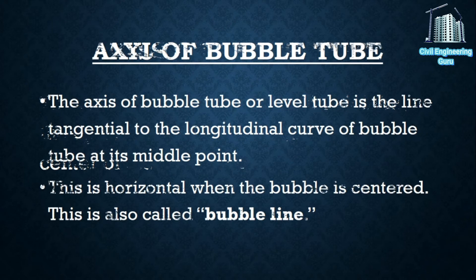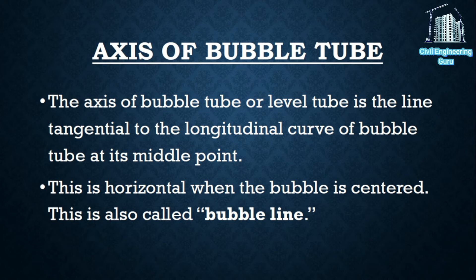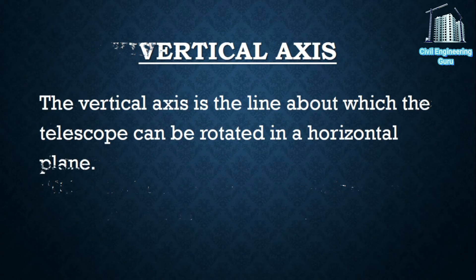Axis of bubble tube: the axis of the bubble tube or level tube is the line tangential to the longitudinal curve of the bubble tube at its middle point. This is horizontal when the bubble is centered, and is also called the bubble line. Vertical axis: the vertical axis is the line about which the telescope can be rotated in a horizontal plane.